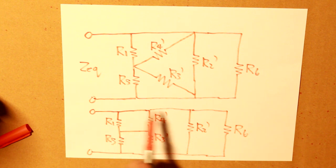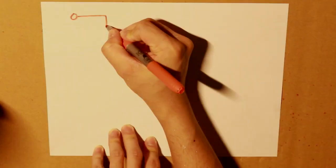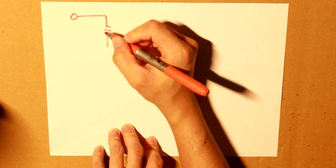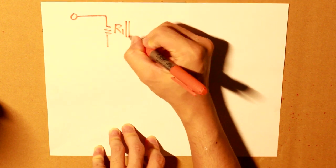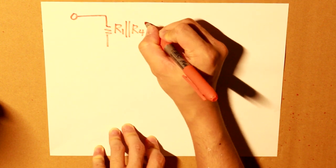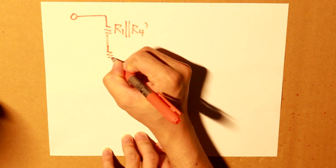So what we can see is that this is how our circuit is now. What we can see is that we can simplify this area of the circuit all together.